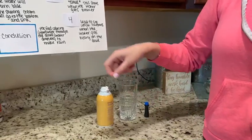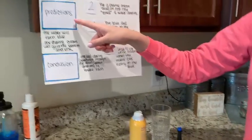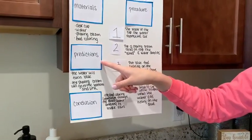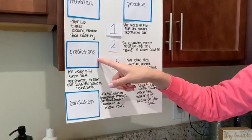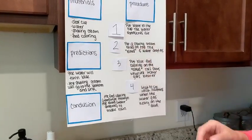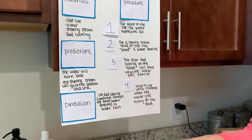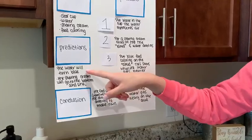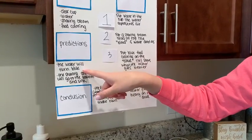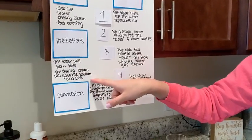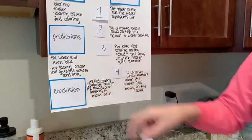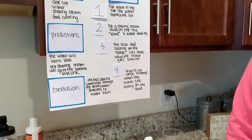Next we are going to make our predictions for our experiment. Predictions just means what we think is going to happen. The first prediction is the water will turn blue, and the second one is the shaving cream will go to the bottom and sink.